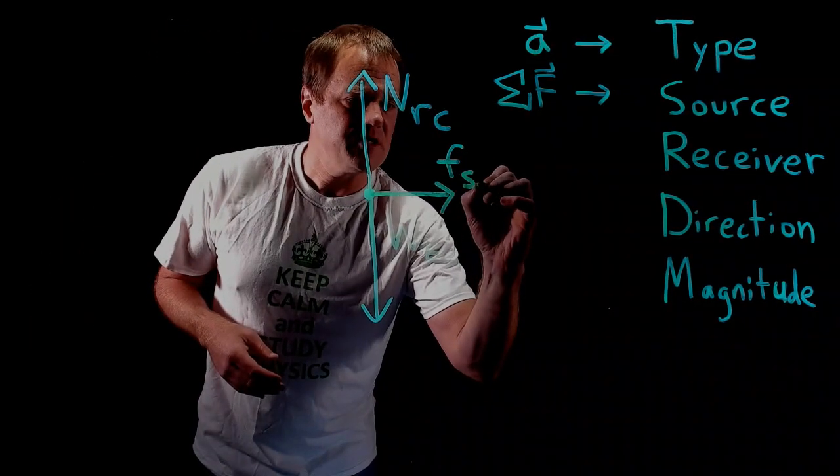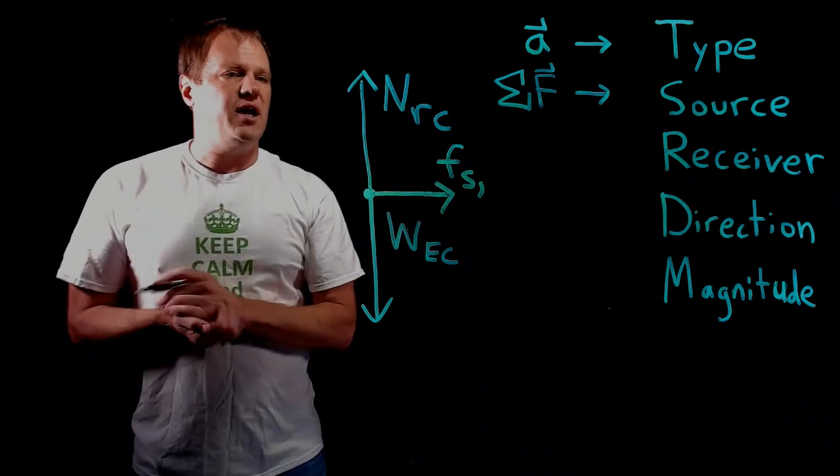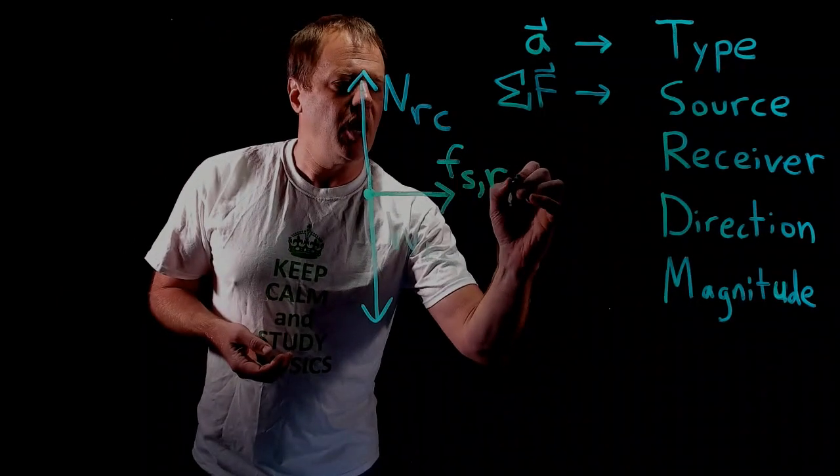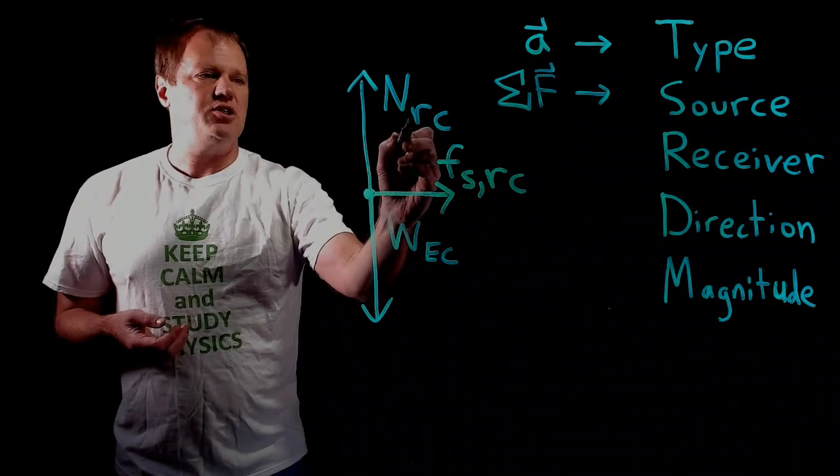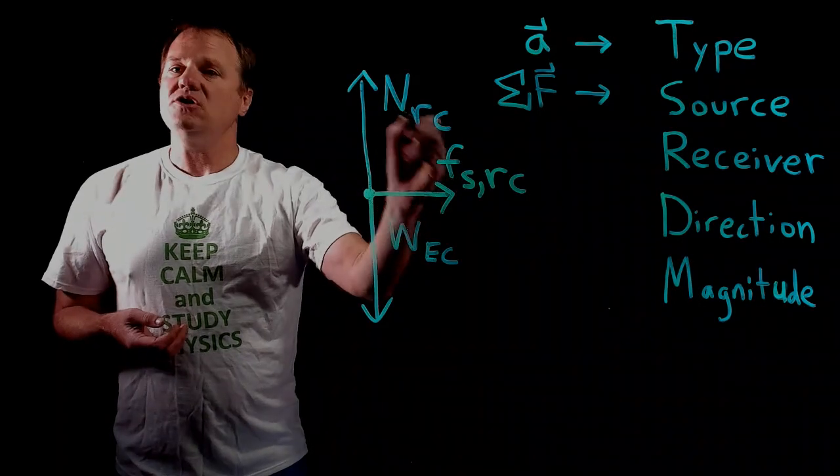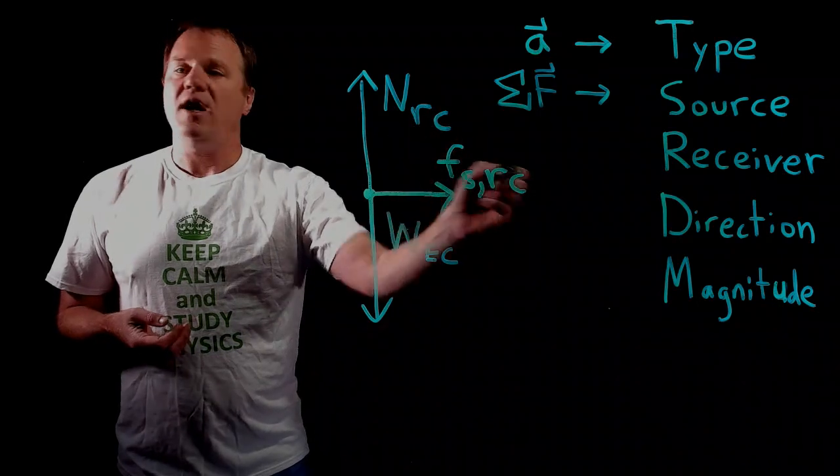And we actually have three subscripts here. So static friction exerted by the road on the car. And so there's both a mathematical and a causal connection between these two forces. Between the normal force and the friction force. They both have the same source and receiver.